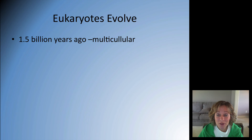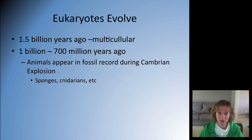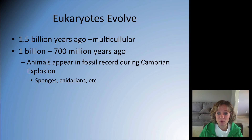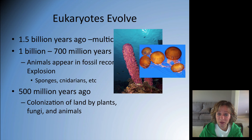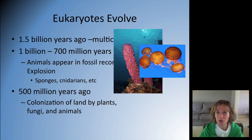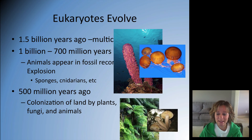Finally, eukaryotes evolved into multicellular eukaryotes about 1.5 billion years ago. Animals appeared during the Cambrian explosion about 700 million years ago — your earliest animal life forms being sponges, cnidarians, etc. About 500 million years ago, we move on to land; up until this point we're still in the water, but now we have plants, fungi, and early animals colonizing land.